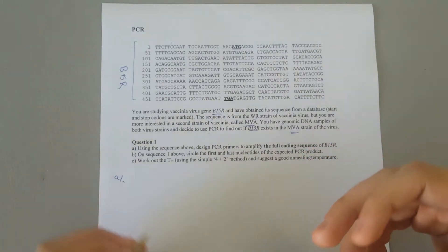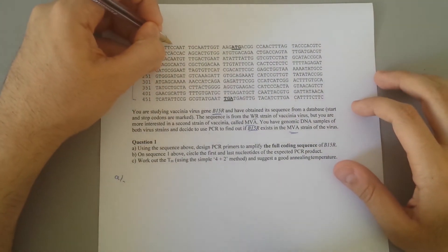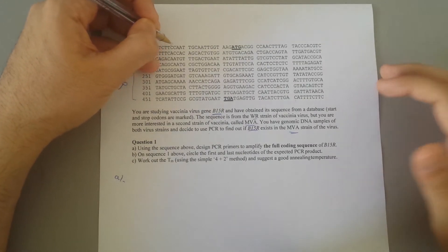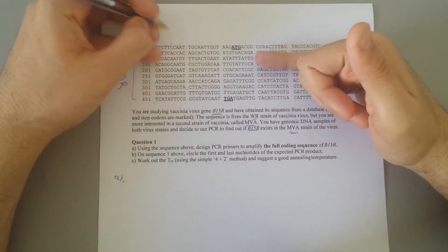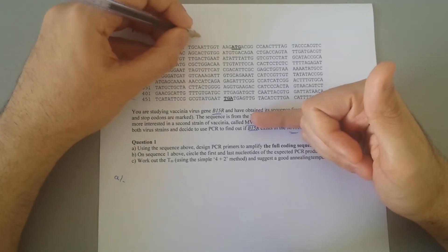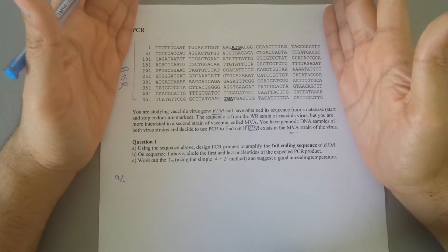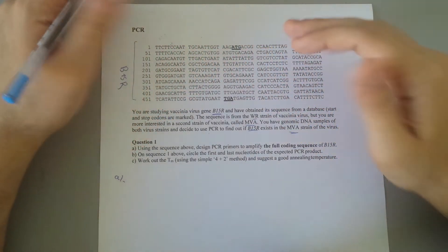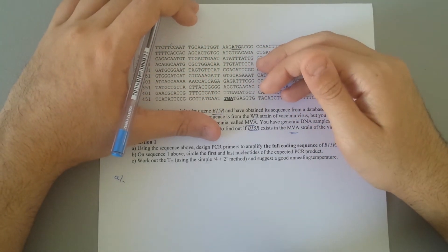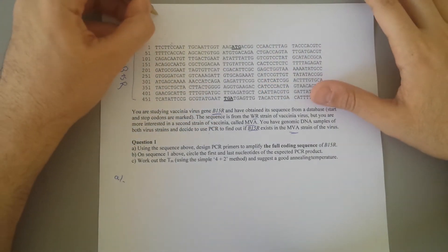So let's start with the question which is asking us to amplify. You want to first find a primer, find 5 prime end to 3 prime end. I've done two previous examples before, so please pause here and give it a bit of a go before I actually do it. Otherwise, I'm going to start it now.